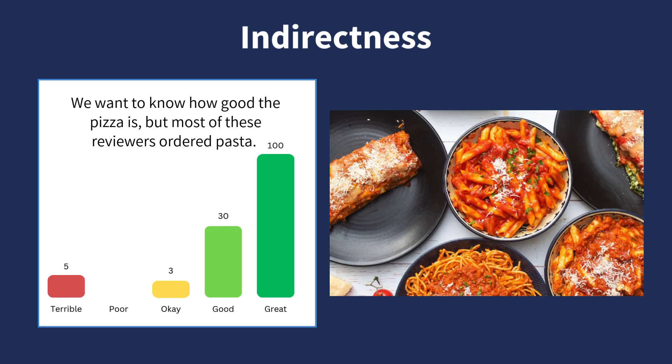The fourth item is indirectness. Indirectness is when the available information isn't directly relevant to answer your question. For example, you might be looking for an Italian restaurant that serves pizza. You see a pizza and pasta restaurant with good reviews, but when you read the reviews, you see that most of the reviews are about the pasta. The restaurant ratings tell you how good the pasta is, but they aren't very informative about the pizza. This is indirectness.